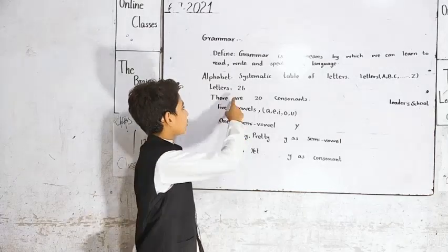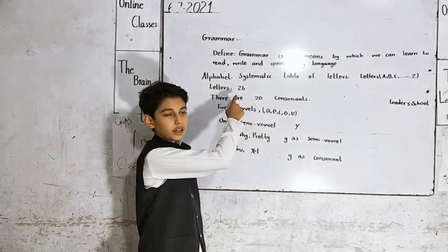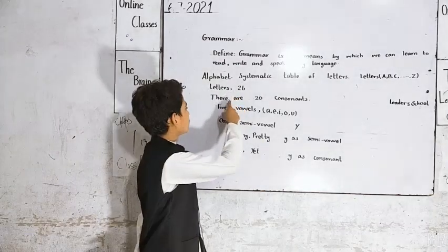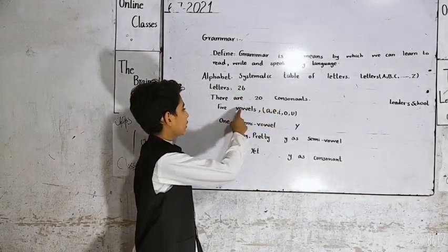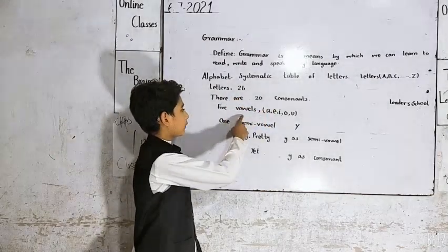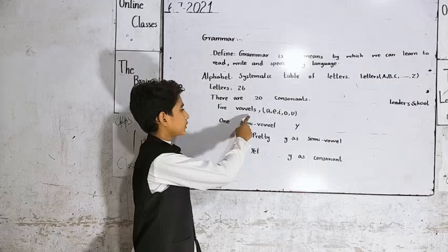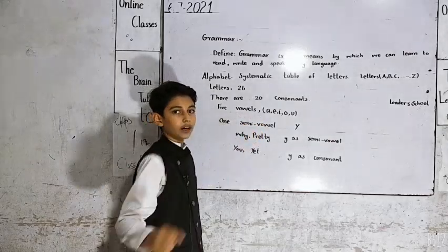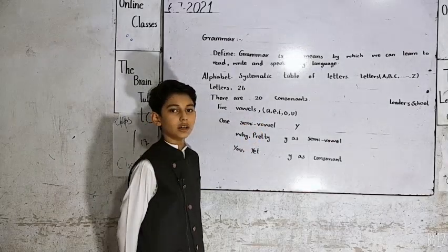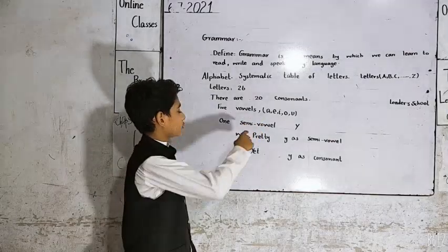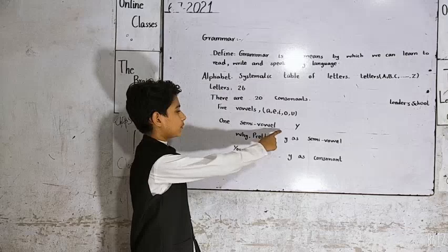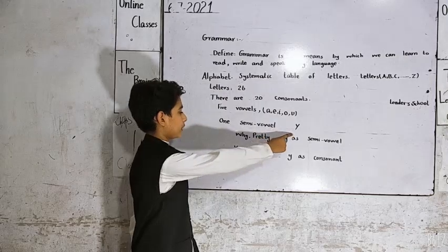The letters of the English language are 26. There are 20 consonants, there are 5 vowels and those are A, E, I, O, U. There is only one semi-vowel and that is Y.